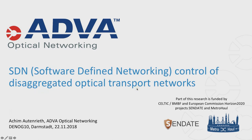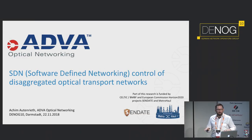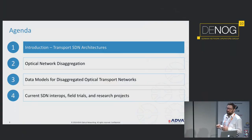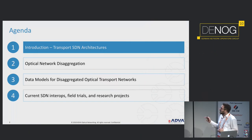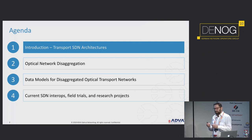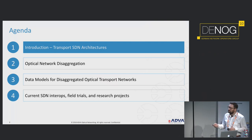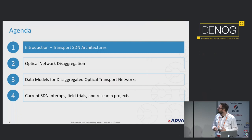This talk is maybe a little bit different, as we go towards lower networking layers — layer one and layer two. The agenda covers four topics: transport SDN architectures, optical network disaggregation, data models for specifying and configuring disaggregated optical transport networks, and finally highlights from ongoing SDN interoperability events, field trials, and recent research projects.